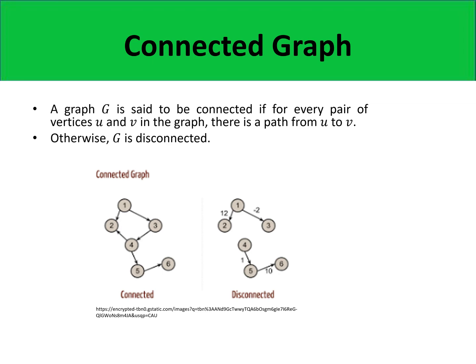A graph G is said to be connected if for every pair of vertices U and V in the graph, there is a path from vertex U going to vertex V; otherwise, G is a disconnected graph. Consider the two graphs on your screens, disregarding the arrowheads of the edges. The graph on the left is connected because if we move from one vertex to another, there would always be a path connecting them. However, in the graph on the right, there is no path connecting vertex 4 to vertex 2, and no path between vertex 6 and vertex 1, so that graph is disconnected.